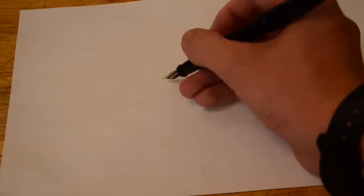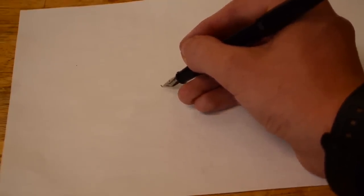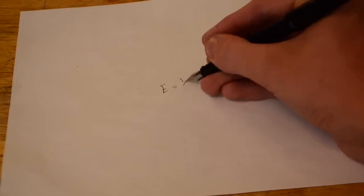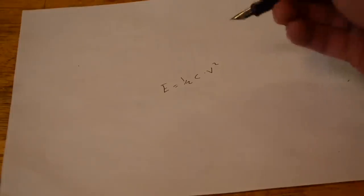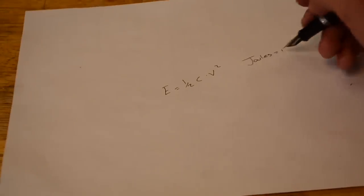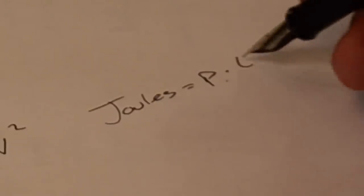If we want to know the energy in joules a capacitor has stored up, we can use this equation. Energy is equal to one-half the capacitance times the voltage squared, and that's going to be the energy in joules. And just so you know, joules equals power times time.